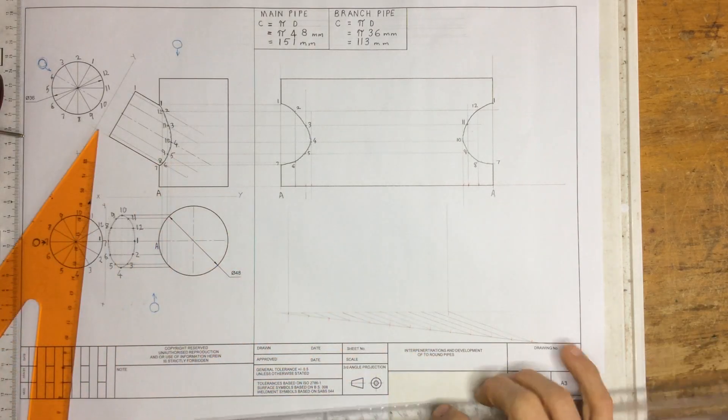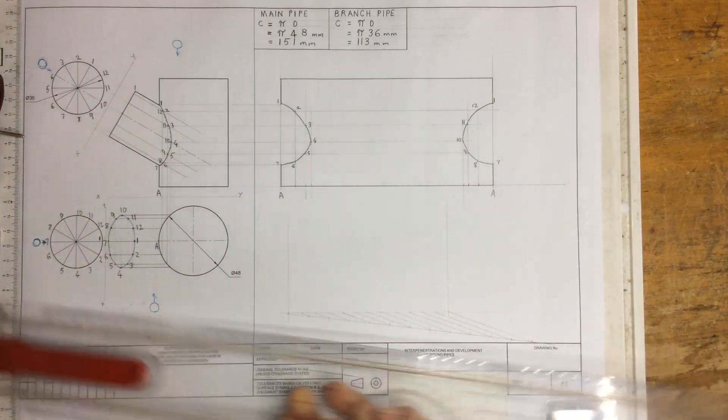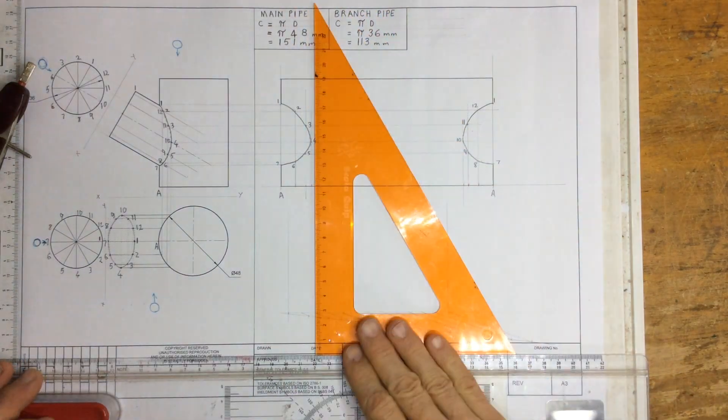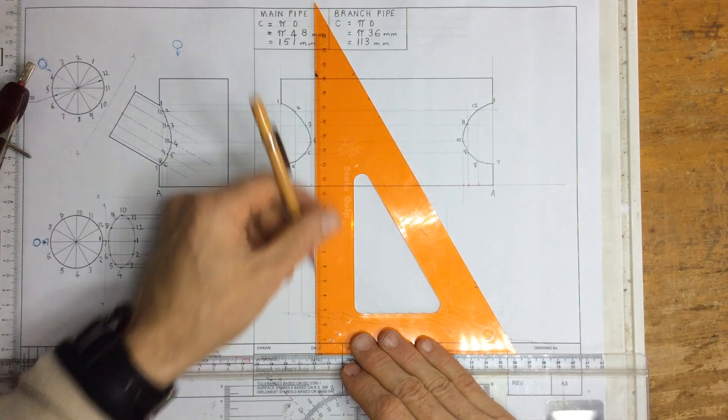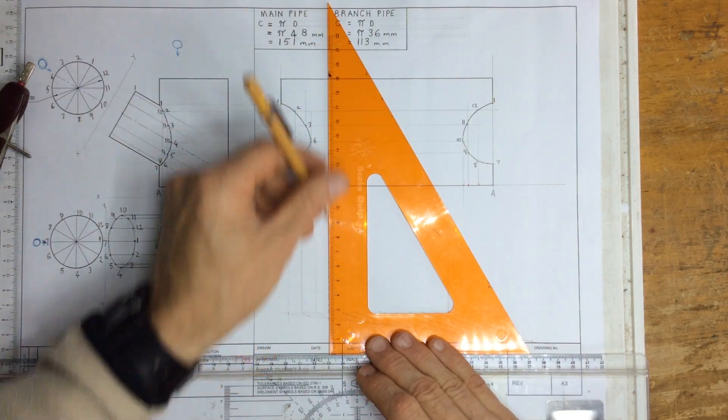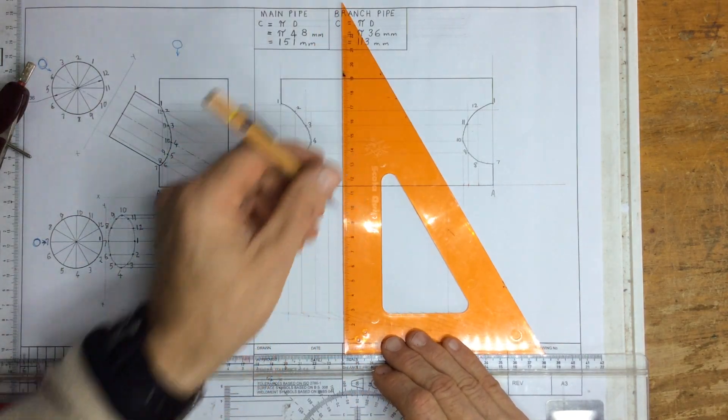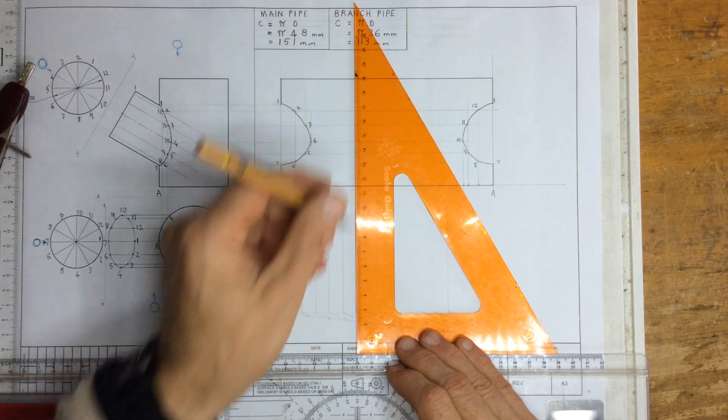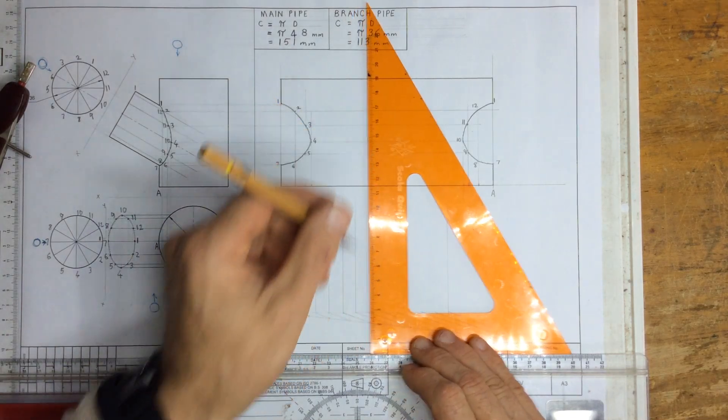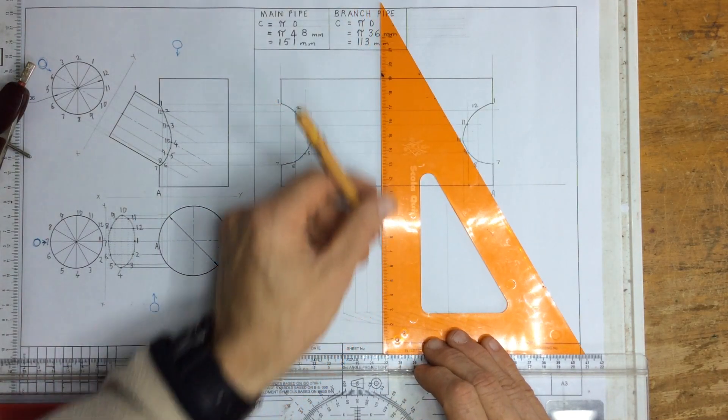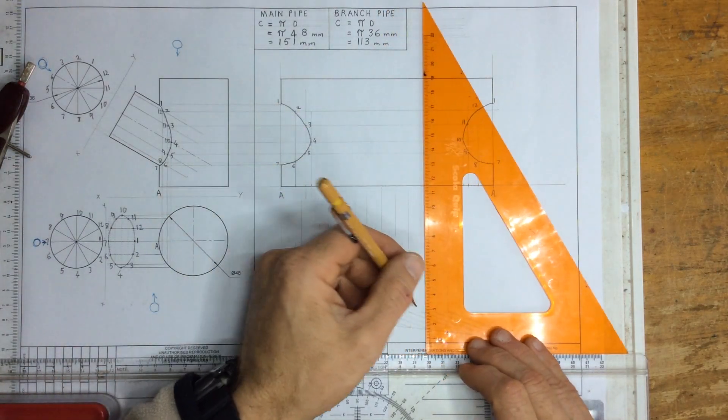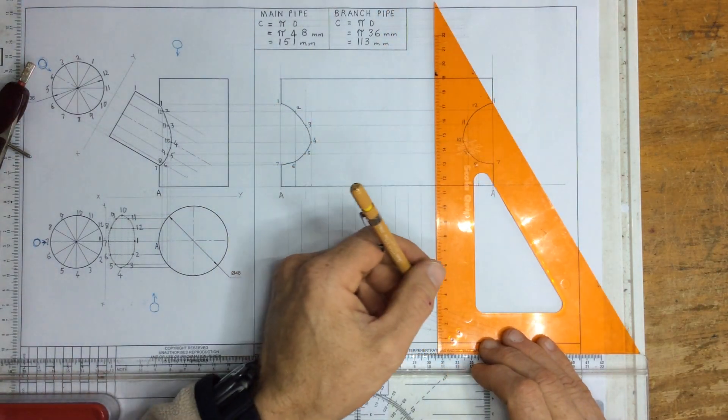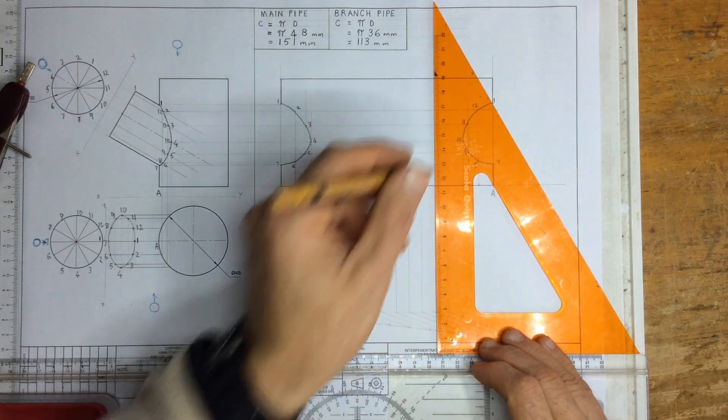Once I've got those 12 equal spaces over there, I can then draw some construction lines coming up over here. There we go, just construction lines coming up.